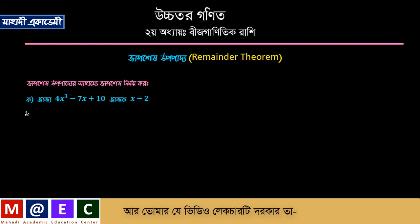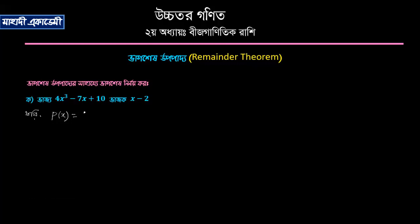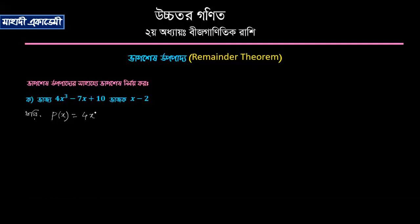We know that the expression involves p of x and q of x. We know that p of x is equal to 4x cubed minus 7x plus 10. This is the problem — what is the problem? We know that p of x is the problem.